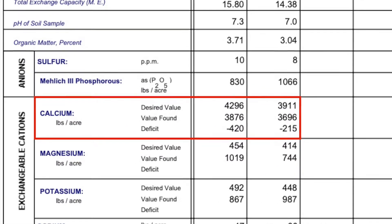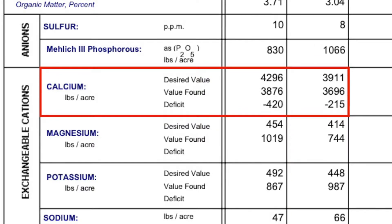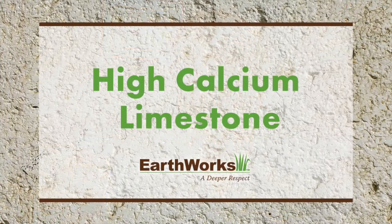As you can see by the deficiencies here, both samples — left and right — have calcium deficiencies. So in this case, the recommendation is using high calcium lime, even though the pH is high. Because what we want to accomplish is using that lime to knock off that excessive magnesium, which will actually start to allow hydrogen to come onto that soil colloid and bring the pH down.